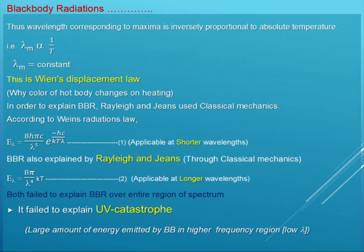The change in color is because of the change in wavelength. If you increase the temperature of the metal body from lower to higher temperature, there will be a decrease in the value of the wavelength, and colors are related to wavelength. So with increase in temperature, the metal body will show different colors on heating. This is the reason, explained on the basis of Wien's Displacement Law: lambda_m inversely proportional to temperature.